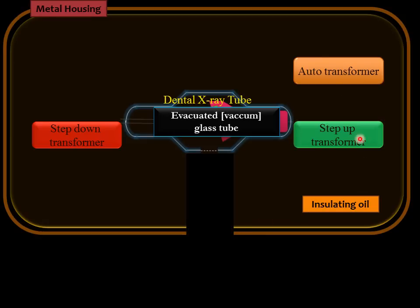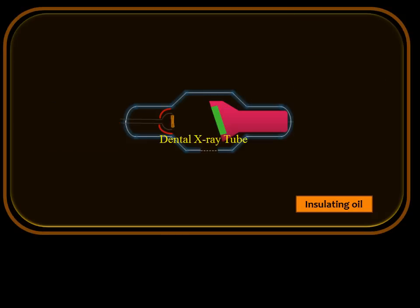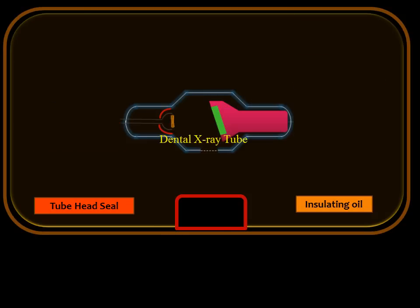The metal tube housing is completely covered except for a small part for permitting the x-rays produced to exit the x-ray tube head. This part has to be sealed so that there is no leakage of insulating oil. This is sealed with the help of a tube head seal, which allows the insulating oil not to leak from the x-ray tube.